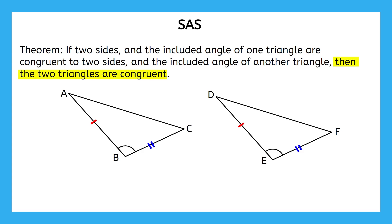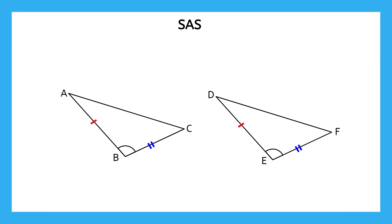Another way to think of this is that the triangles are exact copies of each other — if one was placed on top of the other, they would overlap perfectly. Now that we've established that these triangles are congruent, we need to write a congruence statement. A congruence statement communicates to others that our triangles are congruent and exactly which parts in each triangle are congruent to each other. Our statement will have two triangle symbols and a congruence symbol, and we fill in the blanks with letters from each triangle.